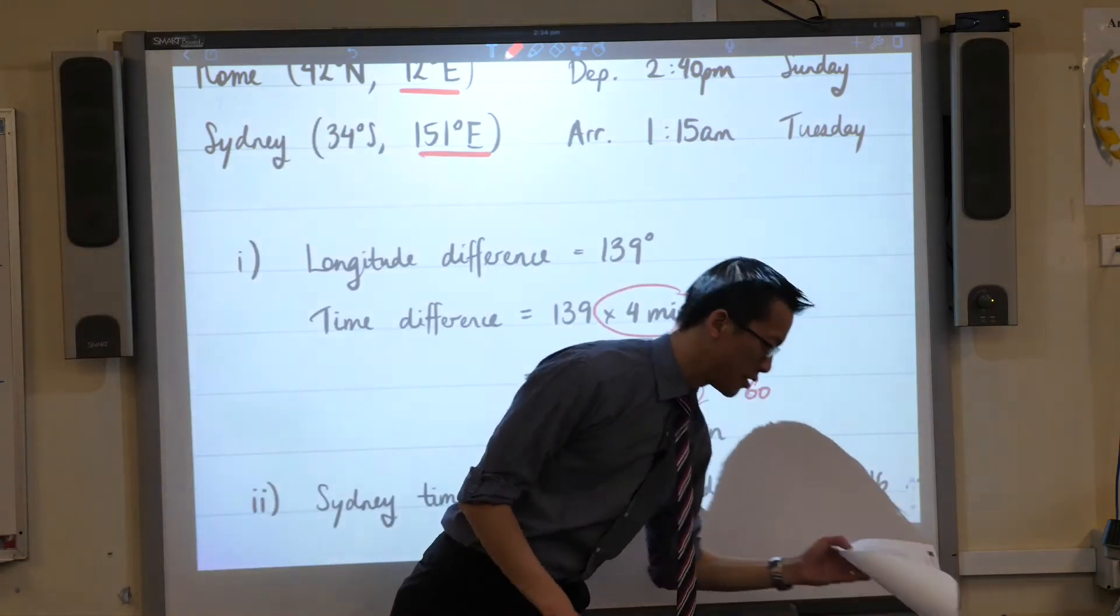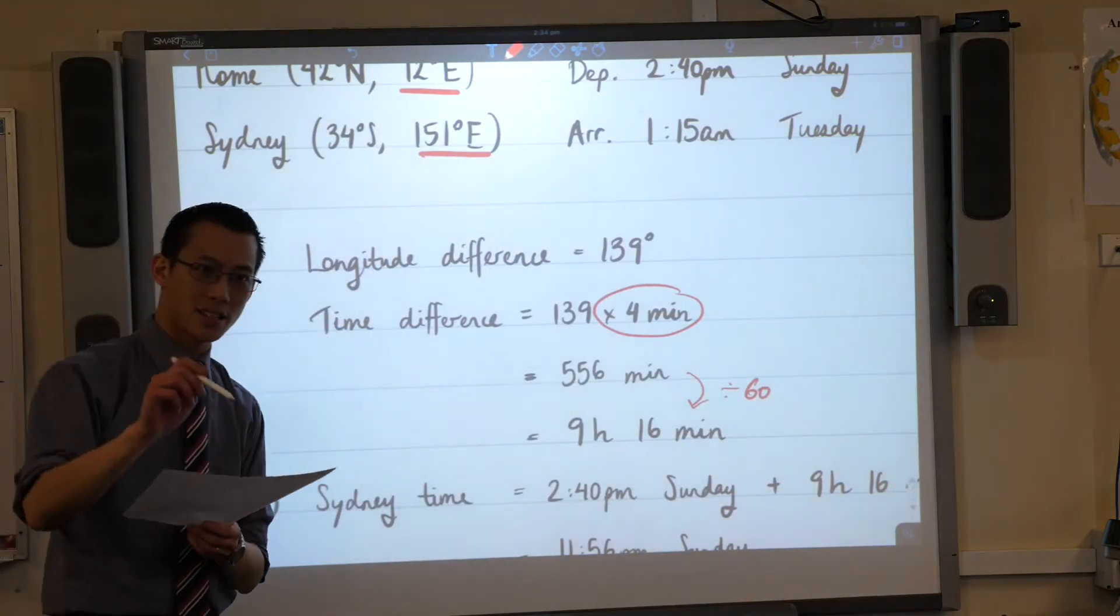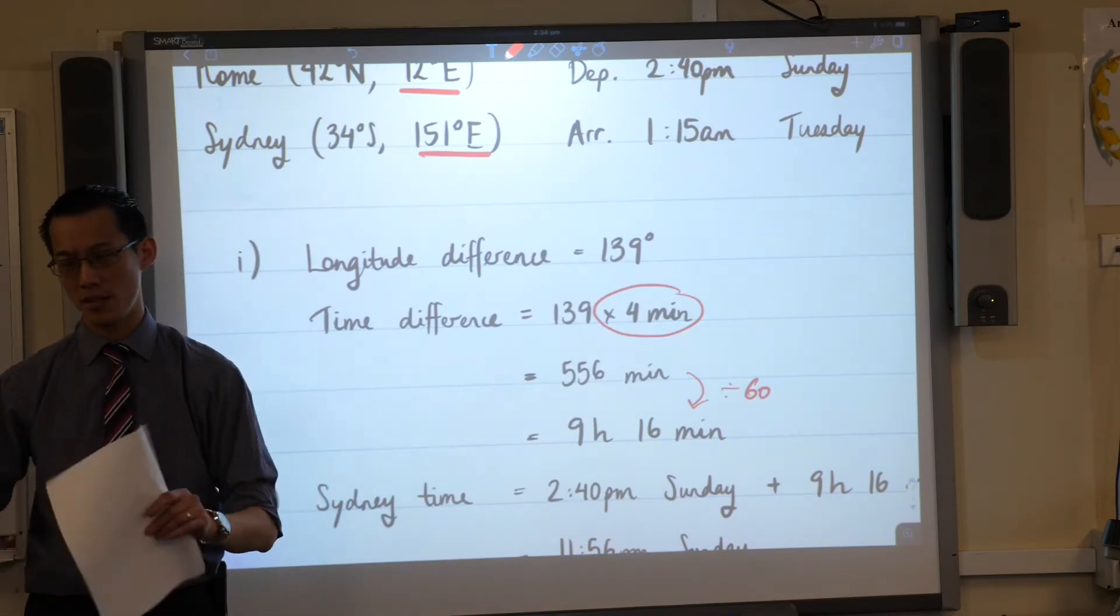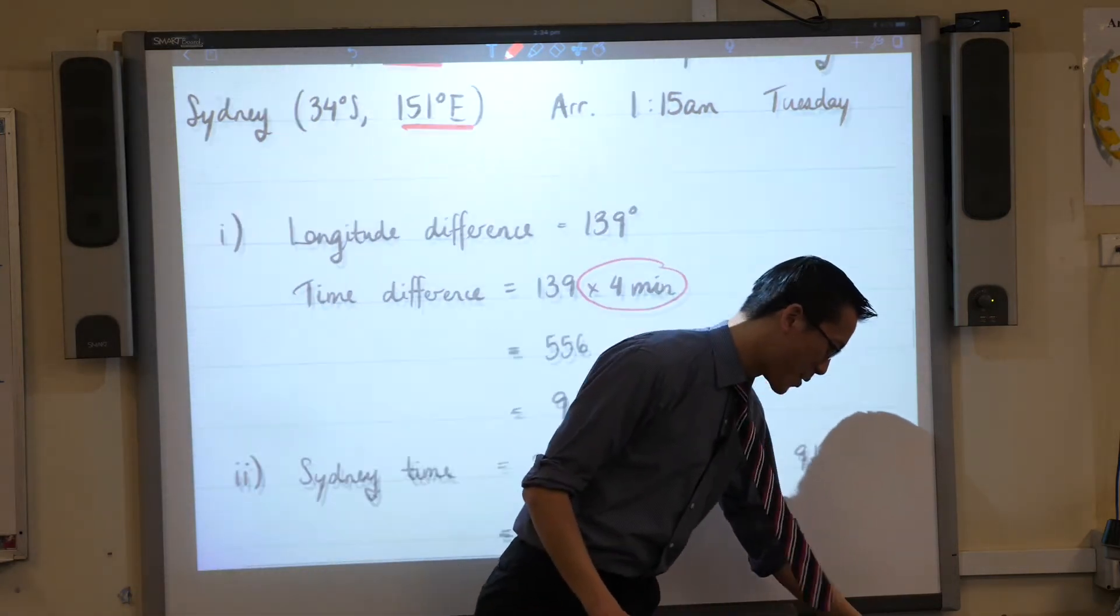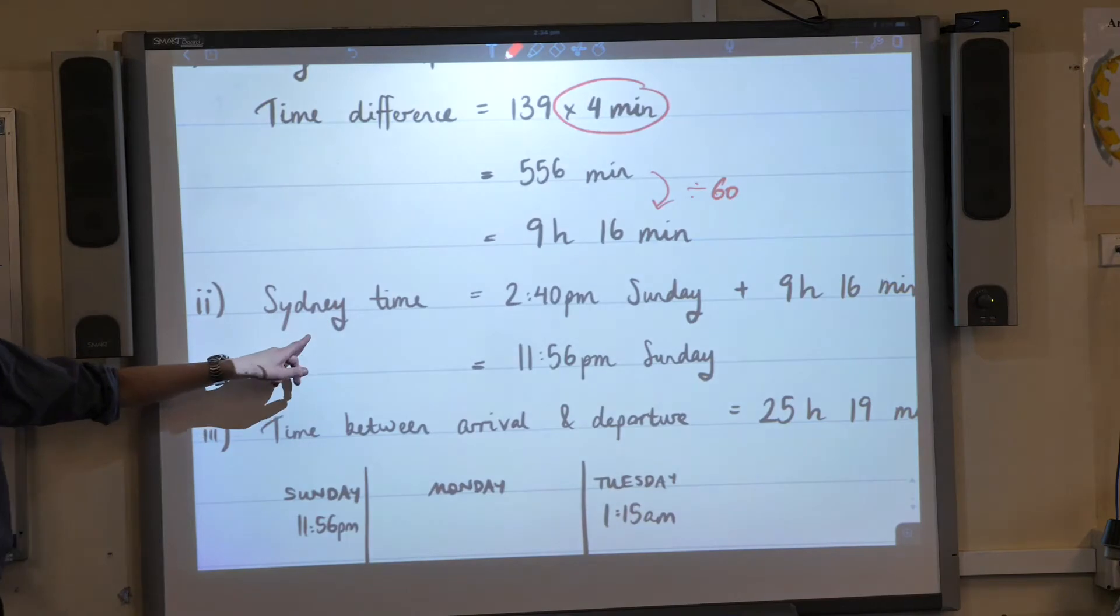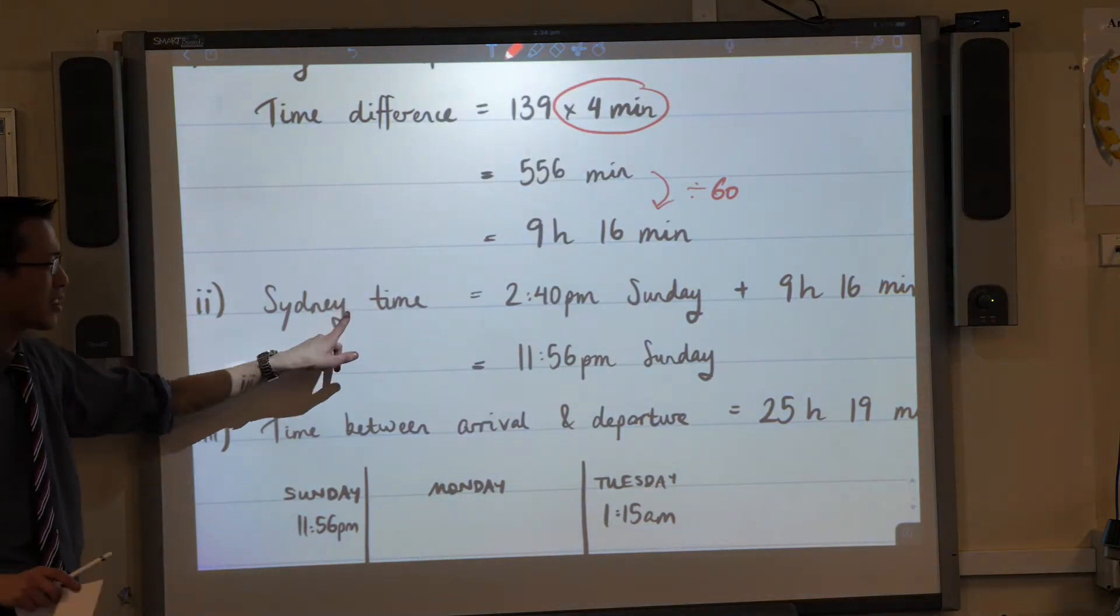Therefore, the next question says, calculate the time in Sydney when the plane left Rome. So what they're trying to lean us toward is, let's forget about Rome time. Let's think about everything in terms of Sydney time. Have a look at the way that I've formatted this. And again, on your working out, please communicate what you're doing.